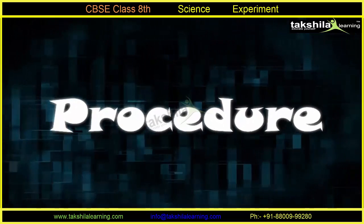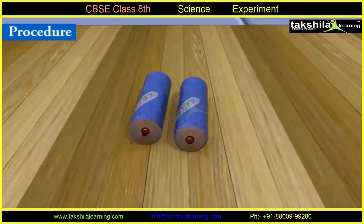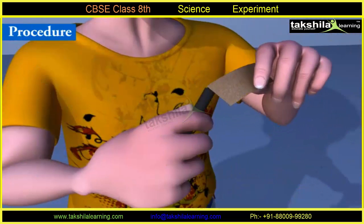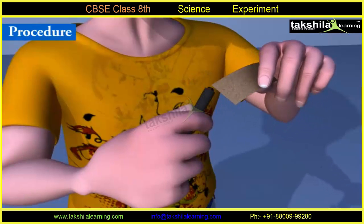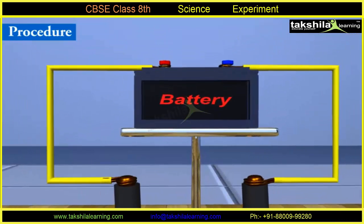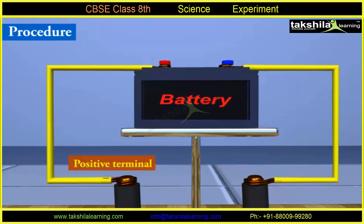Procedure: Firstly, take two discarded cells. Carefully take out their carbon rods. Clean their metal caps with sandpaper. Now, wrap copper wire around the two metal caps of the carbon rods and connect them to the two terminals of the battery. The metal cap connected to the positive terminal of the battery is called the positive terminal, and the metal cap connected to the negative terminal is called the negative terminal.